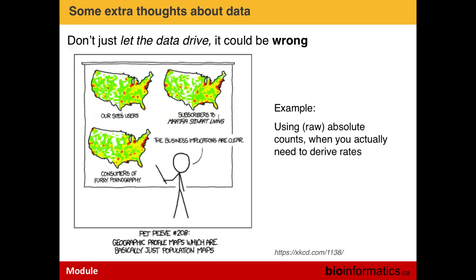You also want to be careful when just overlaying raw data visually. Everybody says 'let the data drive' in a big data era, but you should be careful because you never know if the data is really drunk. This XKCD example shows a presenter effectively showing population maps — website users, subscribers to Martha Stewart Living, and consumers of furry pornography — which all look the same. If you just show raw counts, you're effectively getting population maps, inferring a correlation that is in fact irrelevant. Whereas if you were to show rates, the information would look visually different.